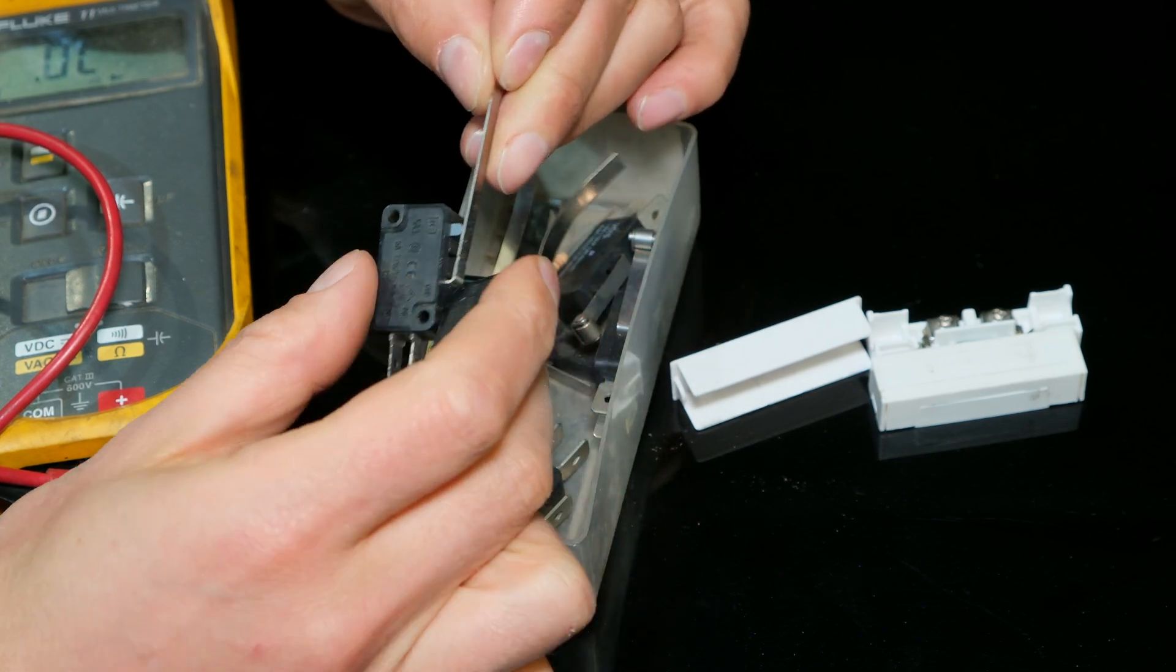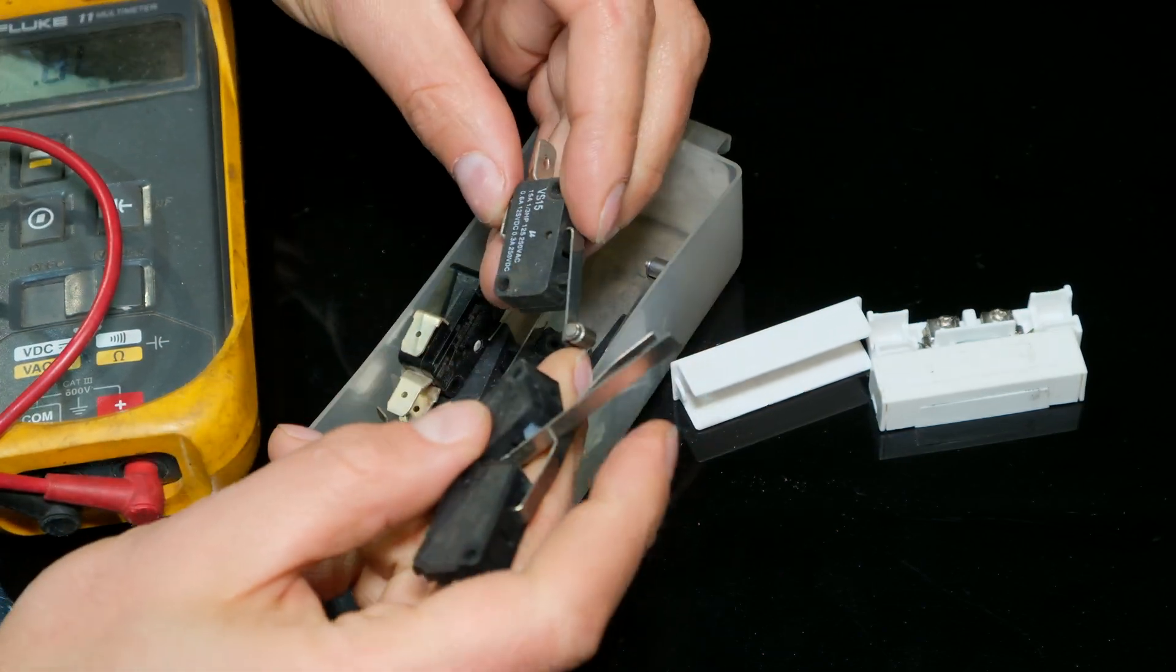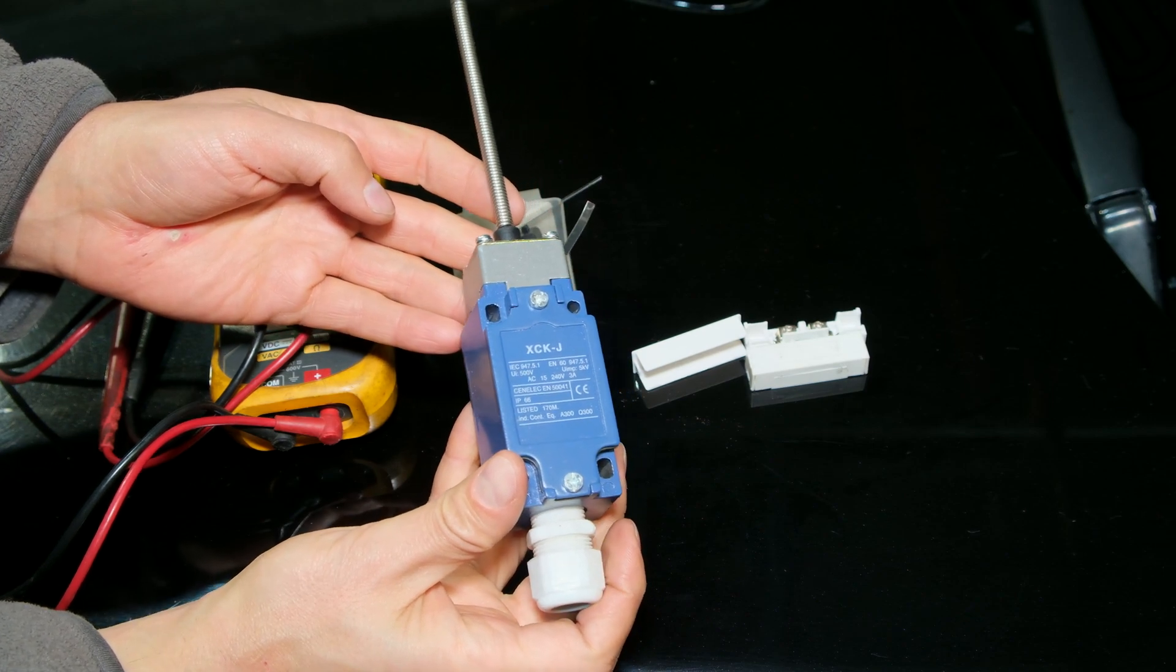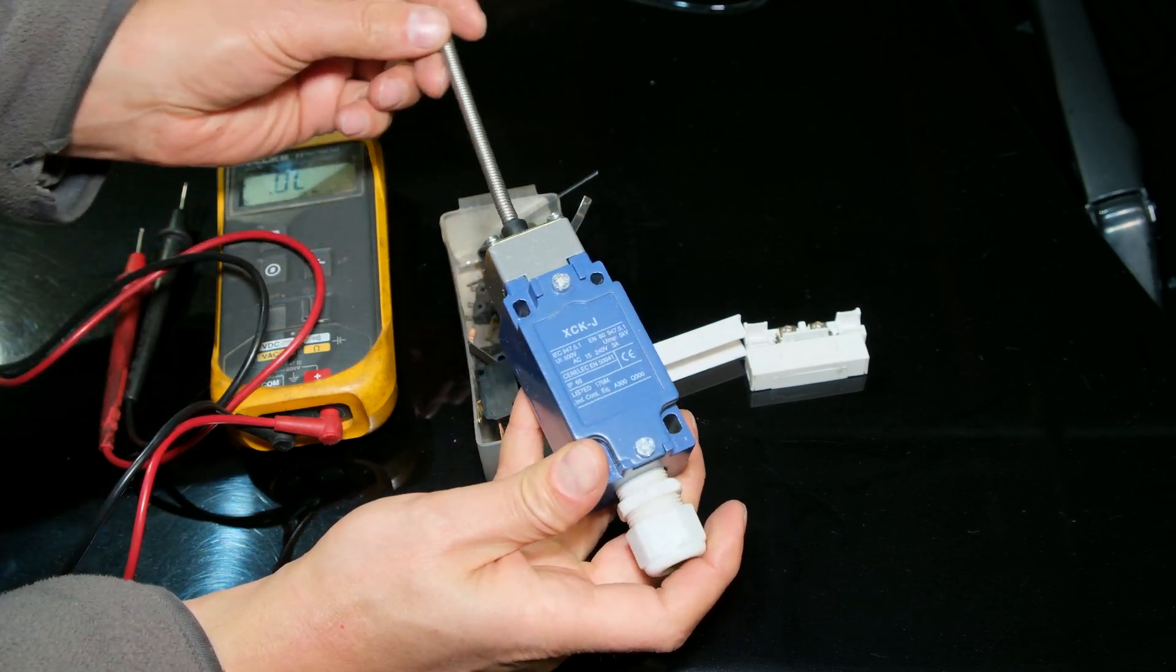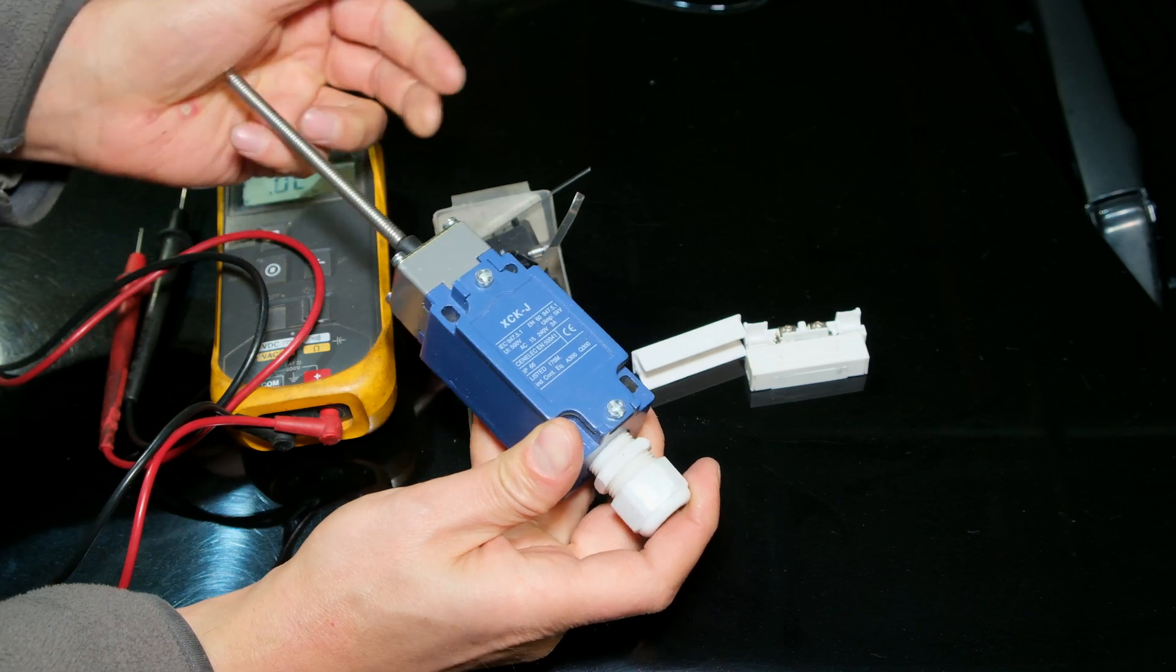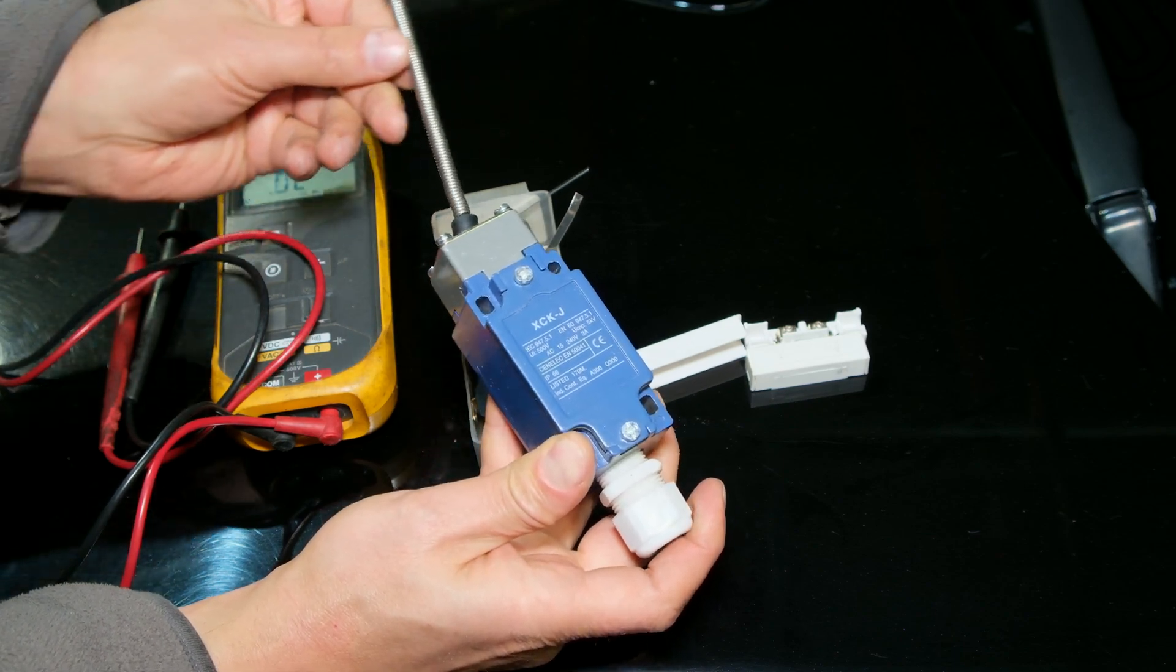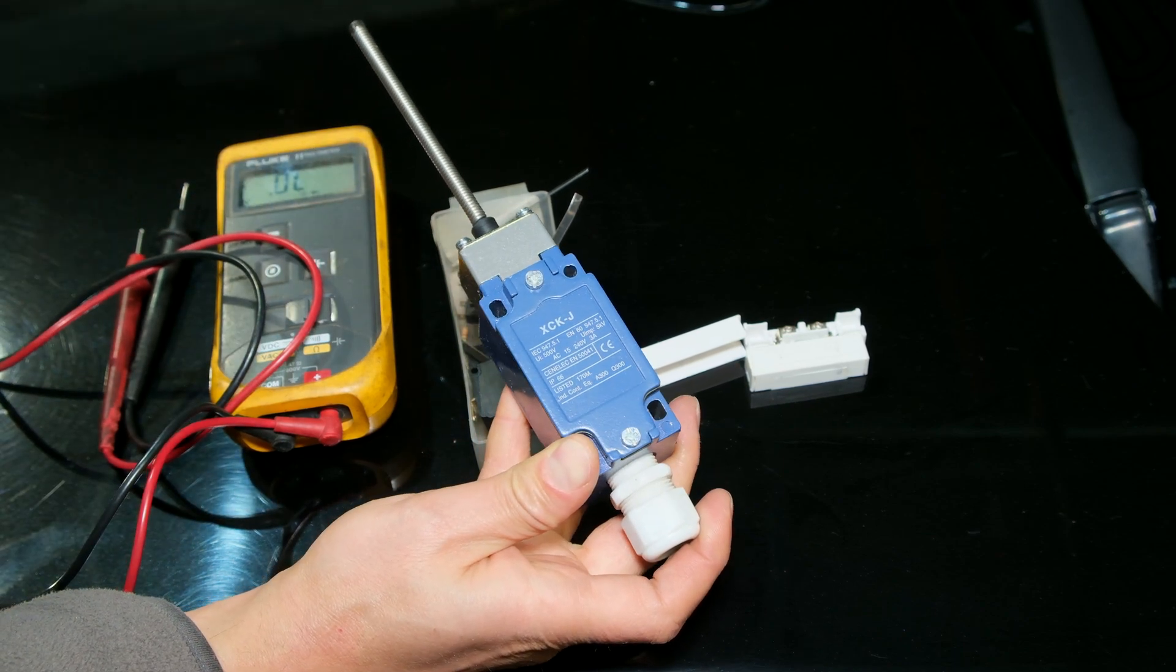Over here I've got a variety of different limit switches. Some have a roller and these can be quite elaborate. This one is a cat's whisker - notice it's got this spring here and you might be able to use this with your garage door. Let me show you what I did on my garage door.